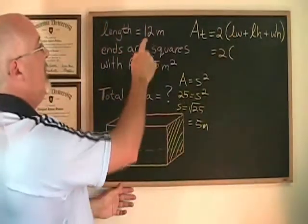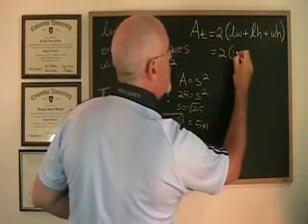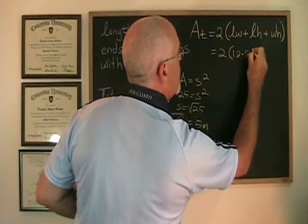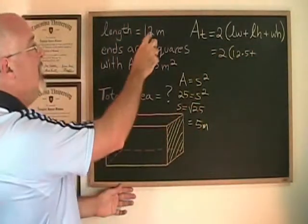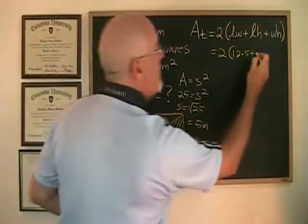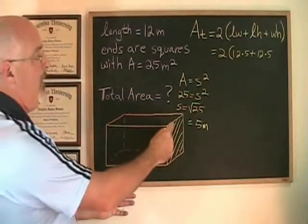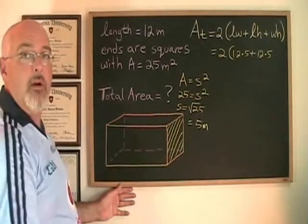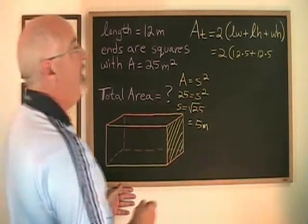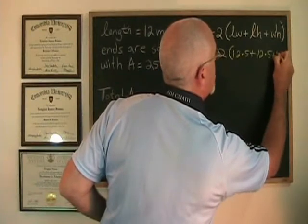Length times width will be 12 times 5. Length times height will also be 12 times 5. Plus width times height - well, width times height is the area of the square at the end of our box, so it is going to be equal to 5 times 5.